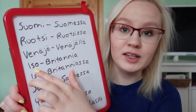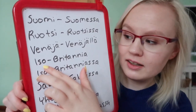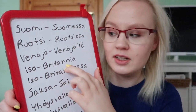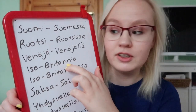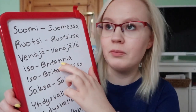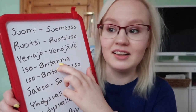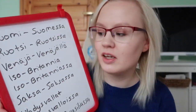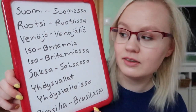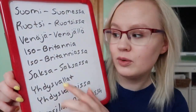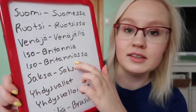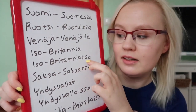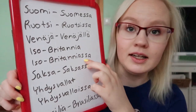Then we have Great Britain — Iso-Britannia. It's quite common to just say Britannia, or Englanti, but that's just England so it's not the same. And 'in Great Britain' would be Iso-Britanniassa — just double S and A at the end.